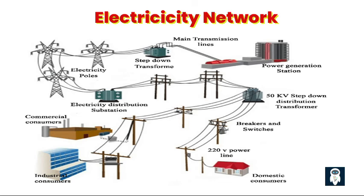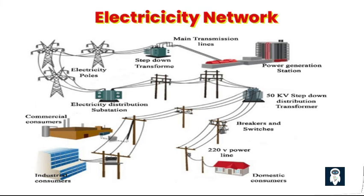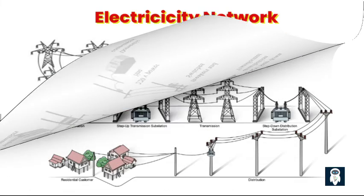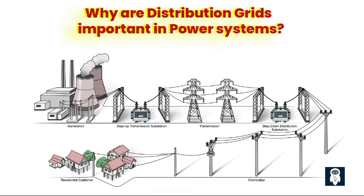The conventional grid design was based on the economics of scale of large centralized power generators. These were connected to bulk power transmission systems and in turn connected to substations, where the voltage levels were stepped down to safer distribution levels for supply in residential, commercial, and industrial areas.